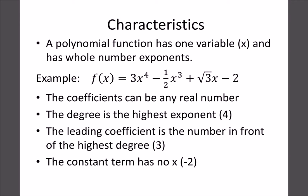A polynomial function is basically anything that has a variable with whole number exponents. That means we have to have an x squared, x cubed, x to the fourth — something along those lines. We can't have negative exponents, square roots, fractions, or anything like that. Even a constant like two is technically x to the zero. So all four of these terms do have whole number exponents.